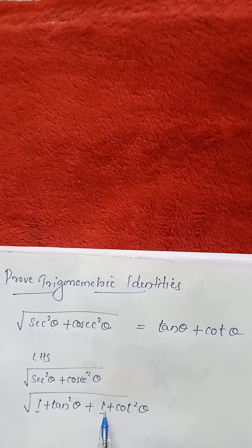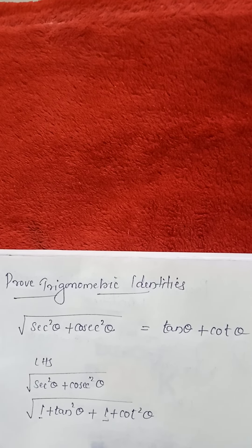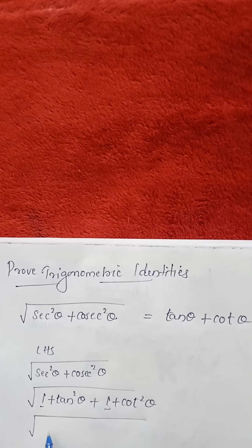So in that, we have to take this one and one side and tan square theta plus cot square theta in the other side. We should arrange it.